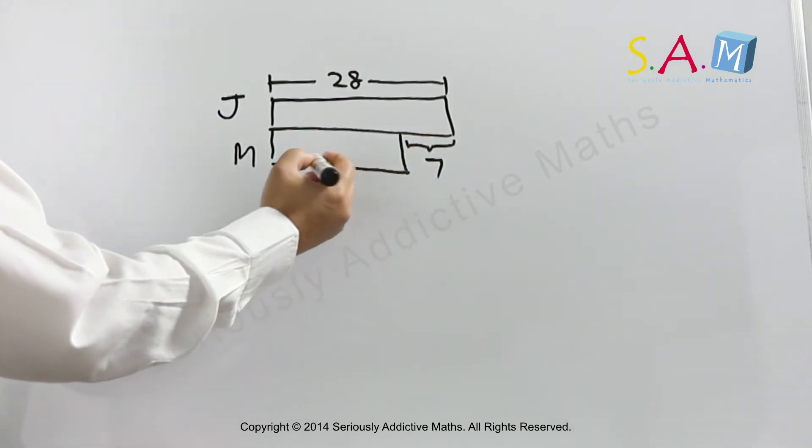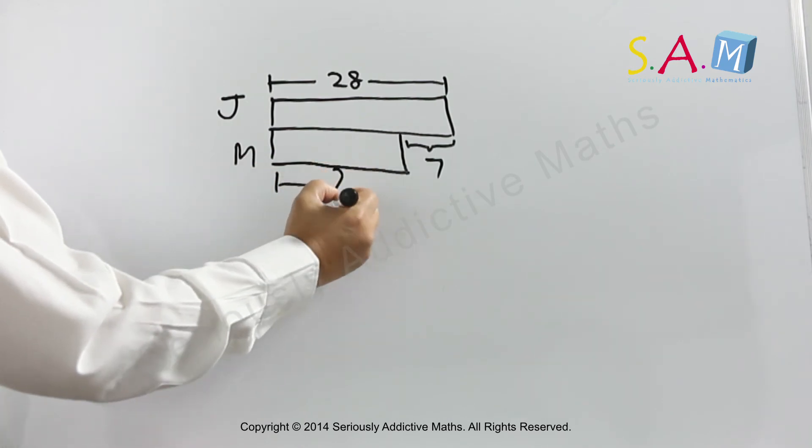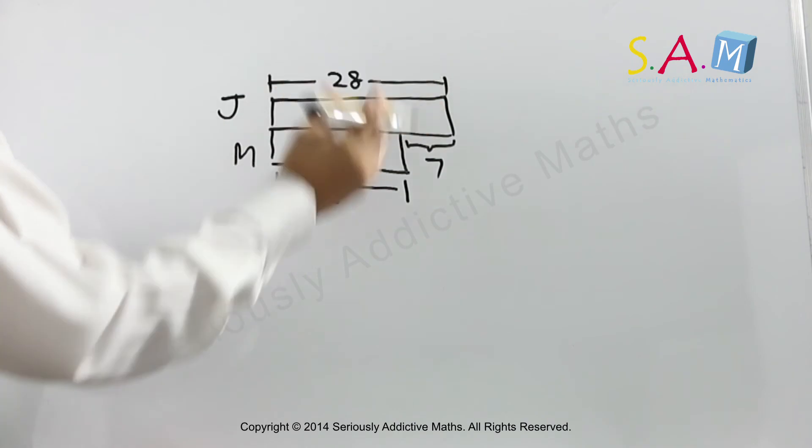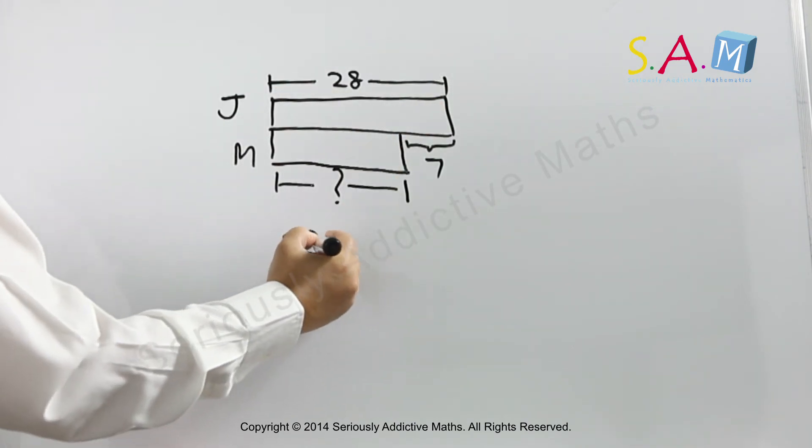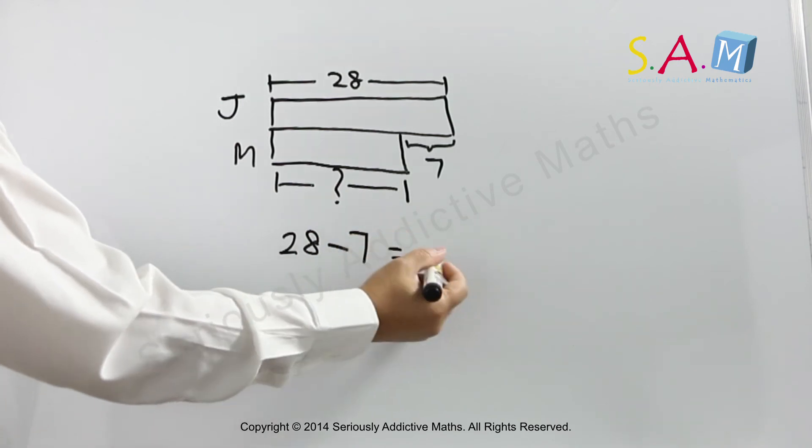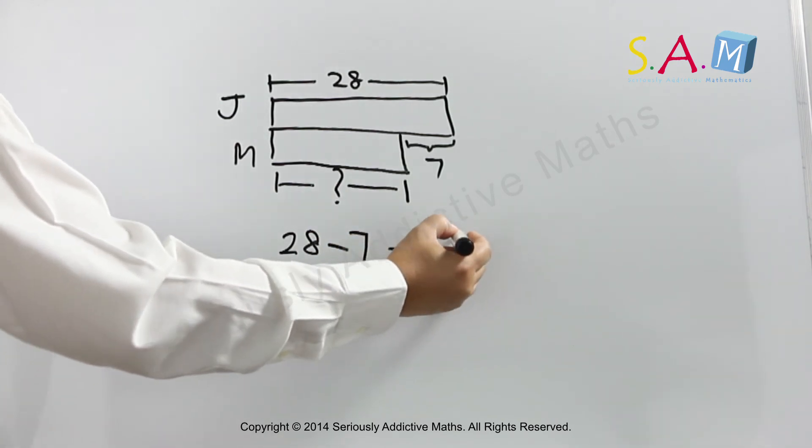So the question is, how many stamps does Mary have? So here we have 28, and if we were to cut away 7, Mary would have 21 stamps.